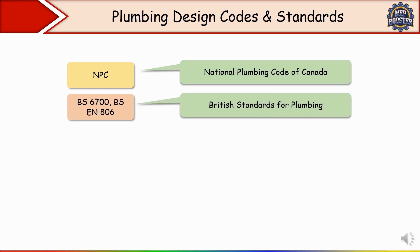Next we have British Standards for plumbing, such as BS 6700 and BS EN 806, published by the British Standards Institution. These standards are used in the UK and Europe. BS EN 806 is a specification for potable water distribution, while BS 6700 covers the design and installation of domestic water supply systems.